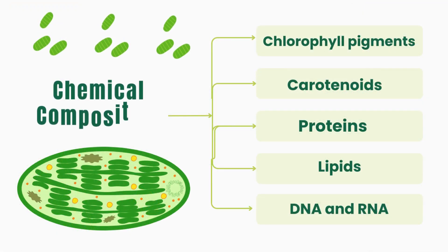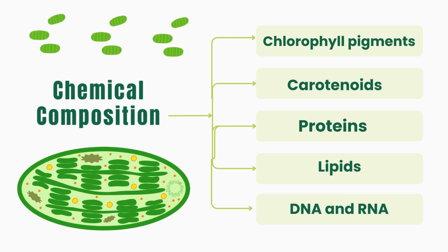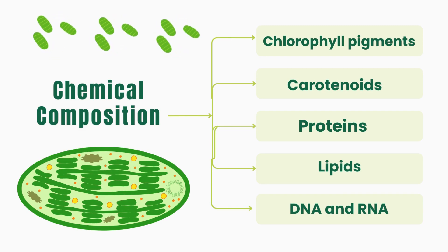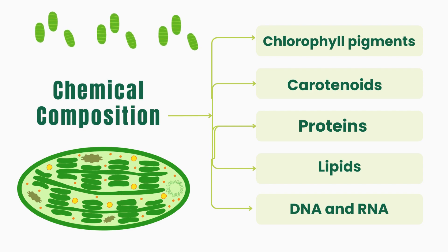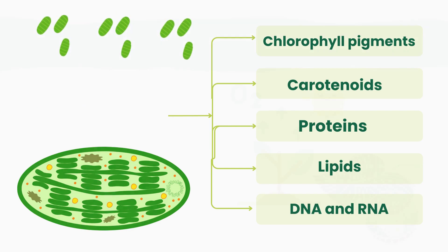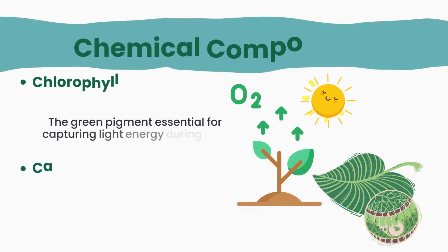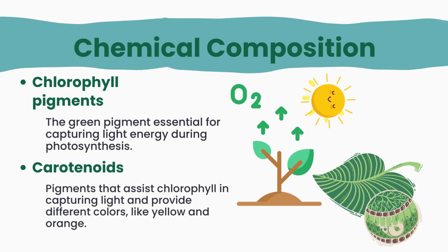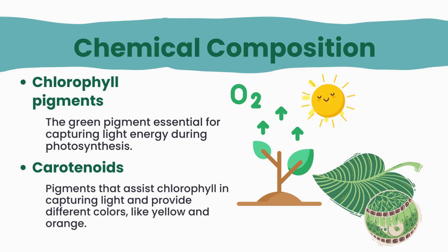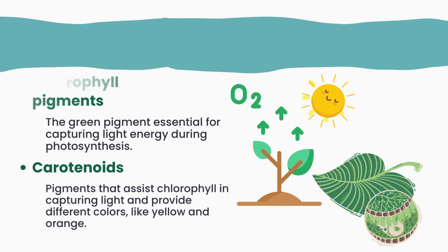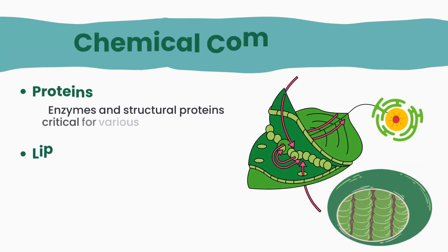The chemical composition of chloroplast includes chlorophyll pigments, carotenoids, proteins, lipids, DNA, and RNA. Chlorophyll is the key green pigment, crucial for capturing light energy in photosynthesis, while carotenoids assist by providing additional colours like yellow and orange, broadening the spectrum of light absorption.